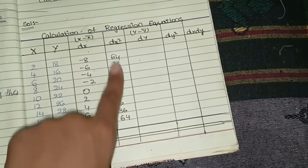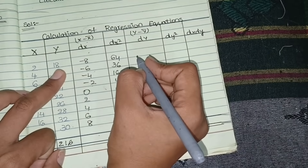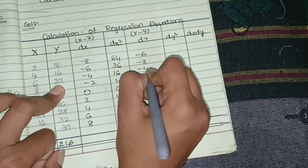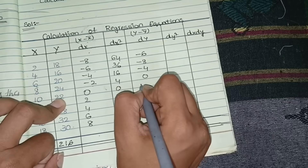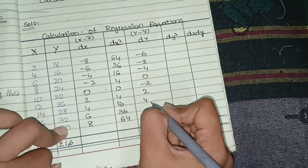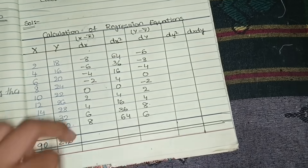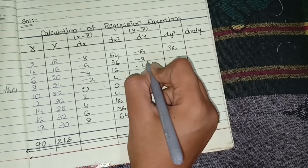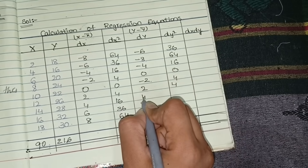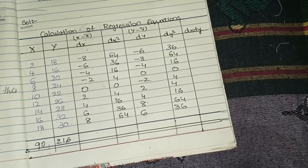For dy, compute y minus ȳ (ȳ = 24): 18 − 24 = −6, 16 − 24 = −8, 20 − 24 = −4, 24 − 24 = 0, 22 − 24 = −2, 26 − 24 = +2, 28 − 24 = 4, 32 − 24 = 8, 30 − 24 = 6. For dy², square each: 36, 64, 16, 0, 4, 4, 16, 64, 36.